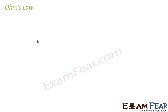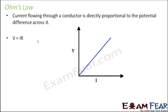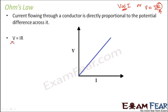Moving ahead with Ohm's Law, which states that the current flowing through a conductor is directly proportional to the potential difference across it. As voltage increases, current also increases — both are proportional to each other. So V is proportional to I, and to change this proportionality to equality, we introduce a constant R, which is resistance. Here V represents potential difference, I represents current, and R represents resistance.